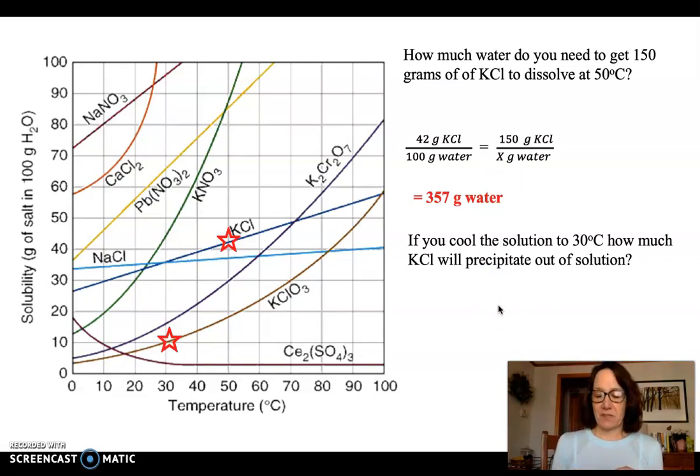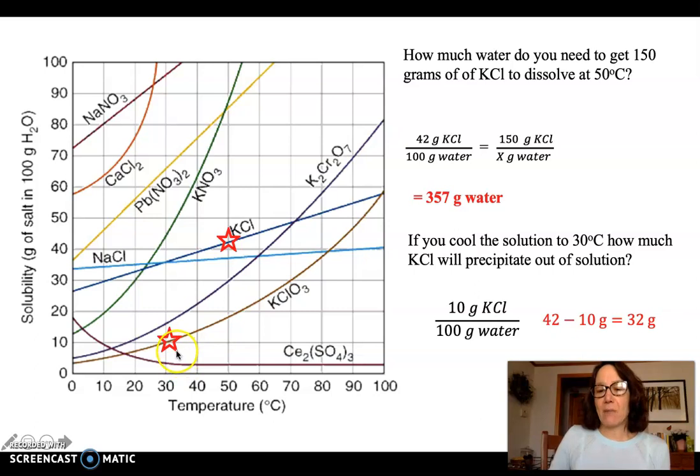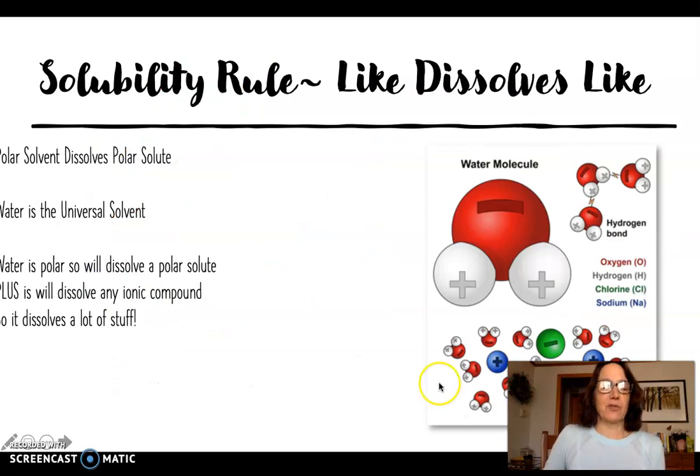If I cool the solution down to 30 degrees Celsius, how much will precipitate out? Kind of like that demo of the supersaturated solution. Once I get a saturated solution and I cool it down, at 30 degrees Celsius, it can only hold 10 grams. Initially, I had added 42, so that would be 32 grams.